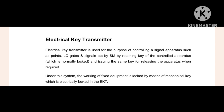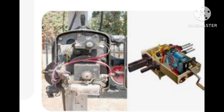Under this system, the working of fixed equipment is locked by means of a mechanical key which is electrically locked in the EKT. Fixed equipment means points, LC gates, and signals. To operate the fixed equipment like points, LC gates, and signals, the key is mechanically in condition and it is locked in the EKT electrically.